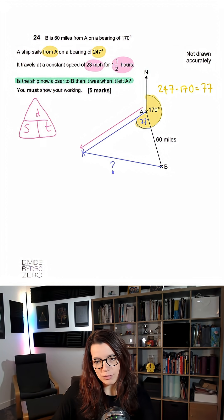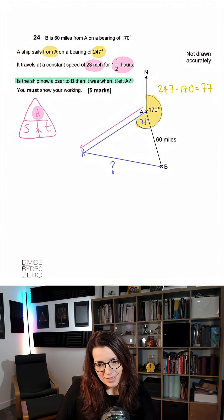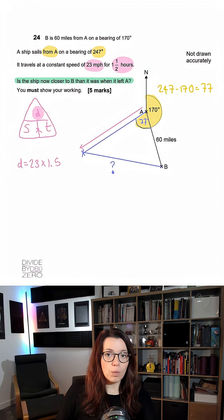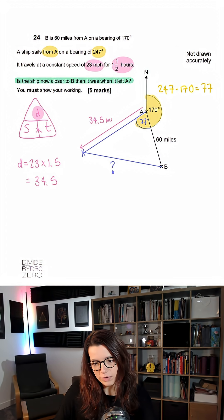Want to know the distance the ship travelled, so I cover that up, means I have to do speed times time. In this case, that would be 23 times 1.5, 1.5 for one and a half hours, equals 34.5 miles.